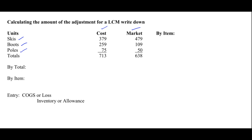You can make the lower of cost or market adjustment for an entire inventory by account totals or by item. Let's start with the account totals. Notice that the cost of the inventory is $713, and the market value of the inventory after all the replacement cost test has been done is $638. Since cost is $713 and market is $638, you simply pick the lower of the two, so by total the value of ending inventory is $638.